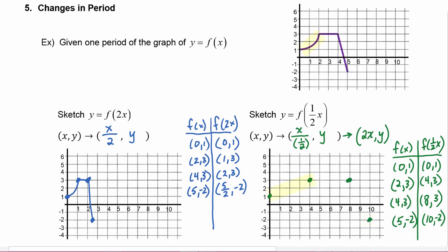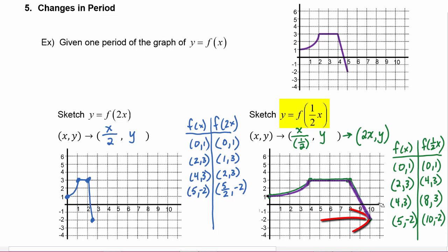As before, the first two points are connected by a curve, the next two by a segment, and the last two by another segment. So here's our graph of f of one-half x. You can see that we actually had a horizontal expansion, or a horizontal stretch. Once again the amplitude remains unaffected because f of one-half x only affects the x values — as we go from f of x to the new graph, the amplitude stays the same, but it was a horizontal stretch.